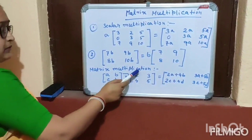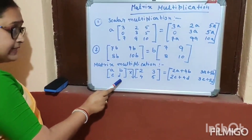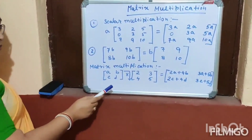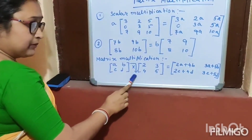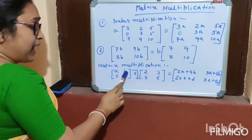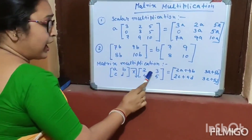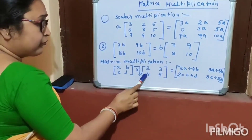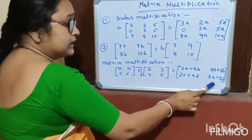Now, matrix multiplication — this is a very, very important part in matrix. Matrix multiplication: [A, B, C, D] into [2, 3, 4, 5]. The way is row to column. First element is 2A plus 4B. Second element is 3A plus 5B. Third element is 2C plus 4D. And last element is 3C plus 5D.